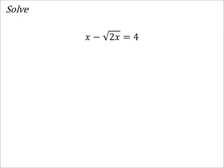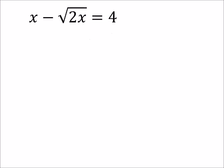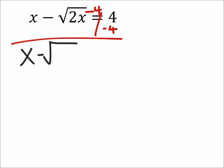This one is a little tricky because we've got to consider the powers on this thing. But let's get everything on one side of the equal sign first. So the first thing I'm going to do is subtract 4 from both sides, and that would give me x minus the square root of 2x minus 4, and this equals 0 now.